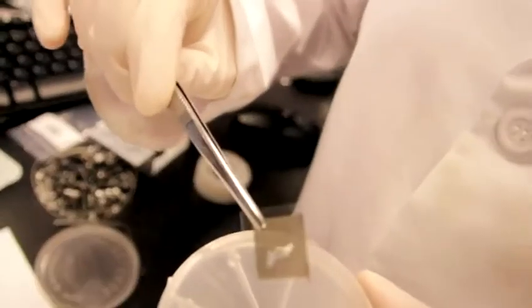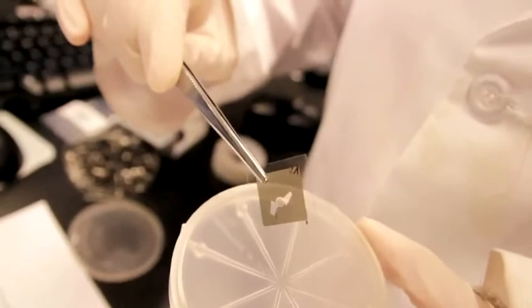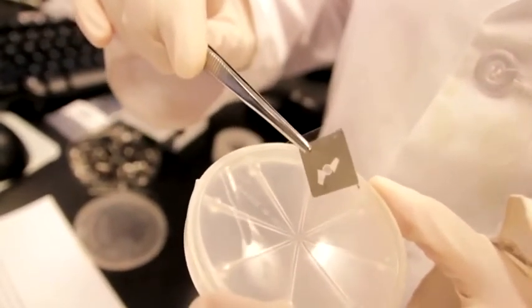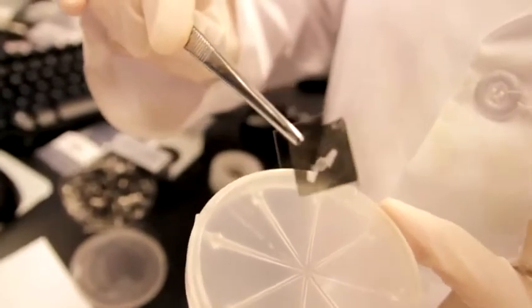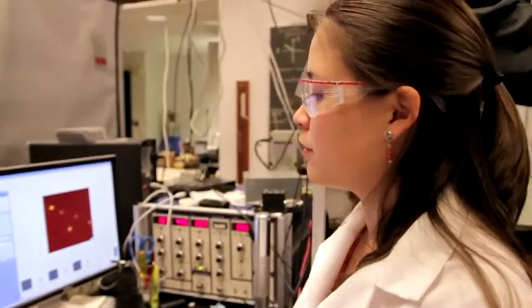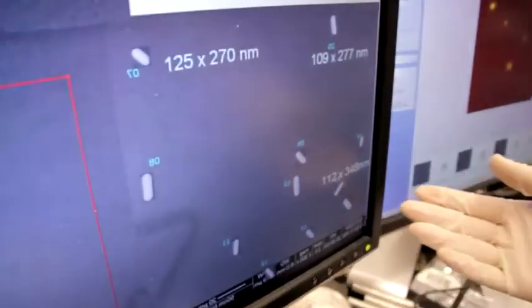I'm going to demonstrate this with some of the nanostructures we discuss in our article that are the easiest to identify in both electron and optical microscopy. On this sample, we have gold nanorods with widths ranging from 80 to 130 nanometers, and lengths ranging from 250 to 500 nanometers.